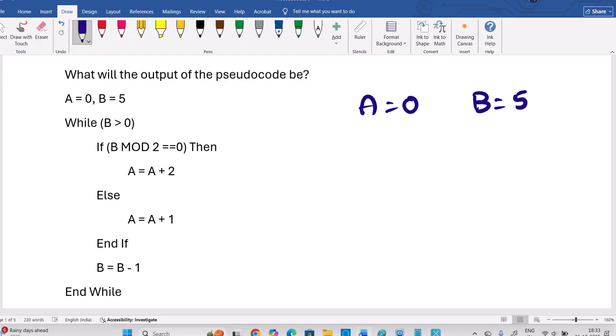And we can increase A by 2. But here, B is odd number. As it is odd number, A will be increased by 1 only. Then B should be decreased by 1. So B is equal to 4, even number now.